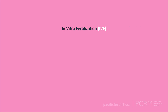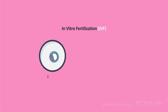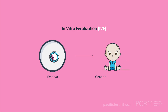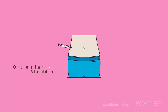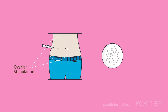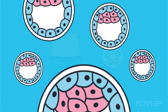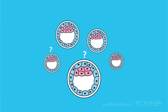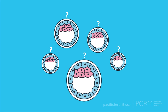The goal of in vitro fertilization is to create an embryo that will result in a healthy, genetically normal infant. Through ovarian stimulation, we aim to produce many eggs, which will hopefully grow into a small group of embryos. But when there are many embryos to choose from, how do we know which ones are the best? There are several ways to pick an embryo.